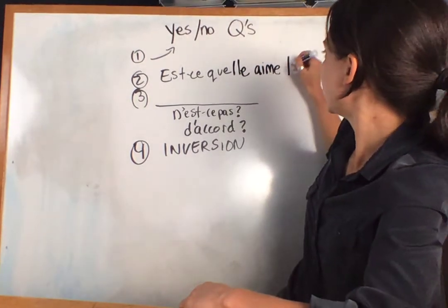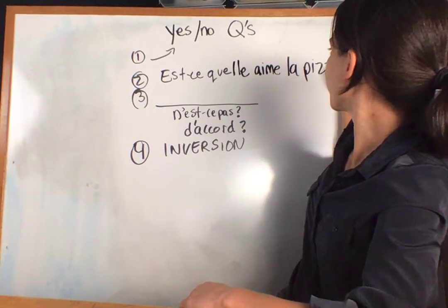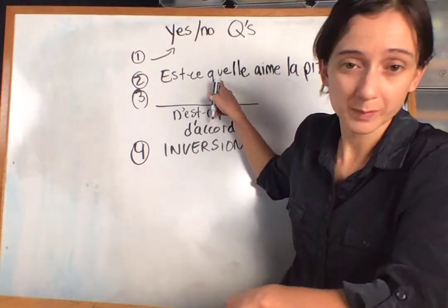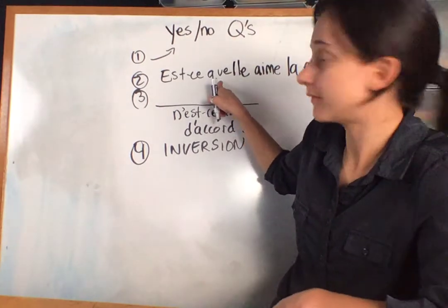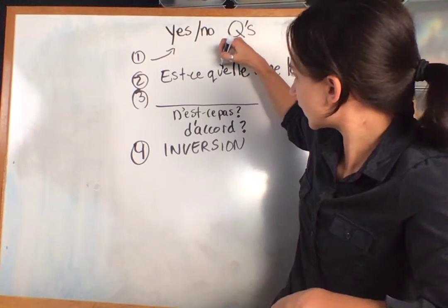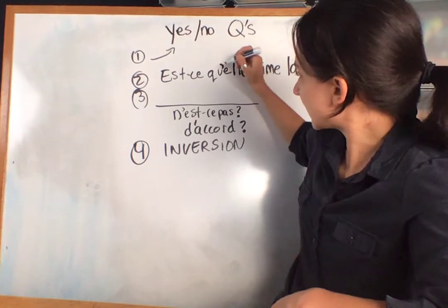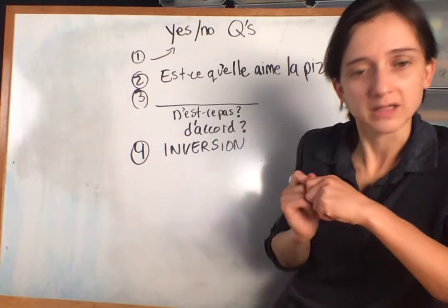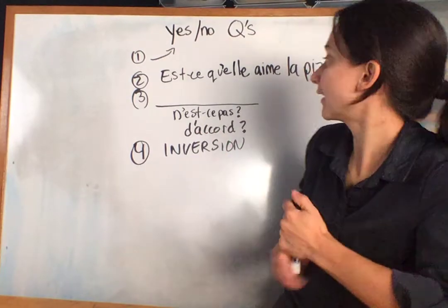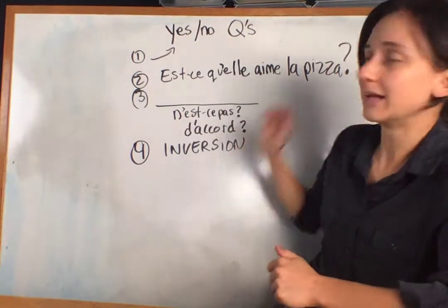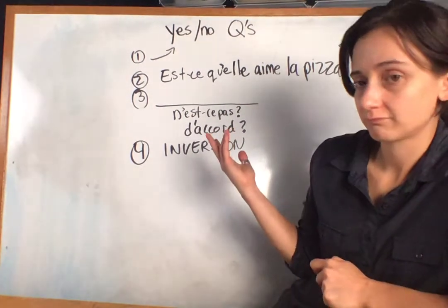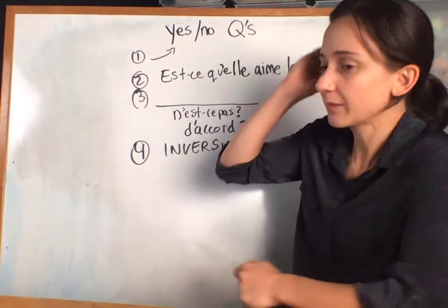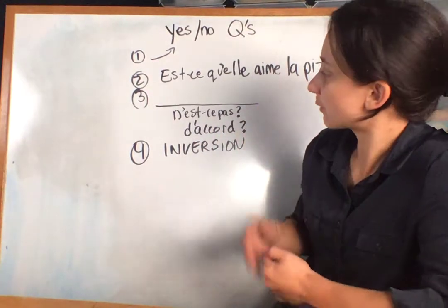So you add 'est-ce que' to 'Elle aime la pizza.' Because we have a vowel here, we're going to make a contraction — we take out the first 'e' on the 'que,' put an apostrophe, and push it together. So it becomes: 'Est-ce qu'elle aime la pizza?' — Does she like pizza? That's the second way to make a question.